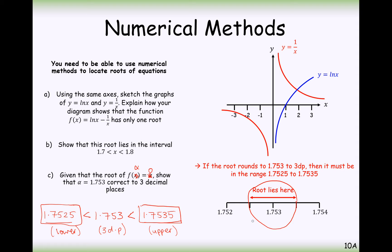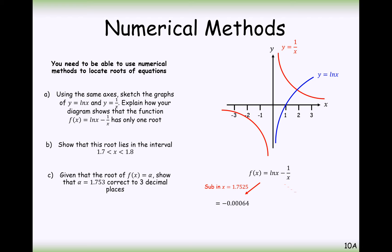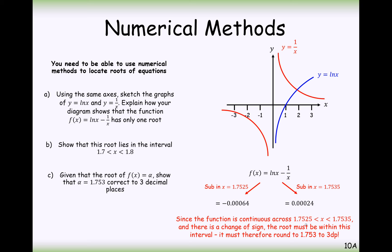And we need to basically show then that there is a change in sign between these two numbers. So let's go ahead and do that then. And we can clearly see here we have a sign change from negative to positive. So therefore, since the function is continuous across the range from 1.7525 to 1.7535, there is a change of sign. The root must be within this interval. So it is therefore correct to round this root to 1.753 to three decimal places. Right then, your turn to have a go at this question here then. Pause the video and try this question out.